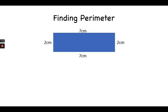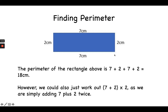So finding the perimeter, we're going to be adding up all the sides. In this case, our figure is 7 centimeters by 2 centimeters, another 7 centimeters on the bottom and 2 centimeters on the side. So I would say 7 plus 2 plus 7 plus 2 centimeters, which gives me 18 centimeters. So the perimeter of this figure is 18 centimeters. We could also say 7 plus 2 times 2, as we are simply adding 7 plus 2 twice.